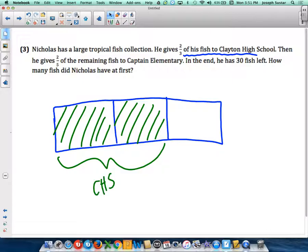Then we keep reading. He gives two-fifths of the remaining fish to Captain. So this last bar that he has, we need to divide that into fifths.